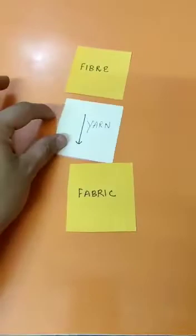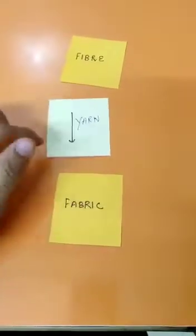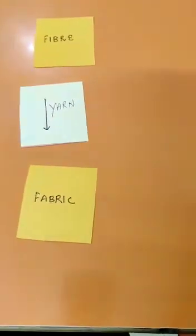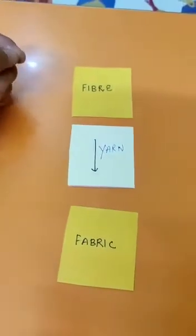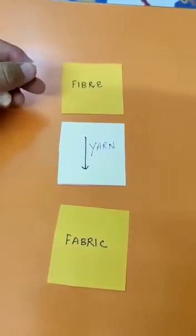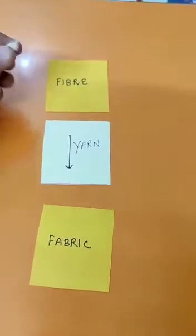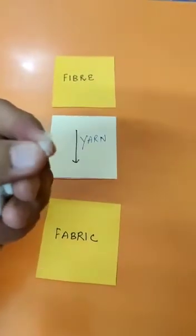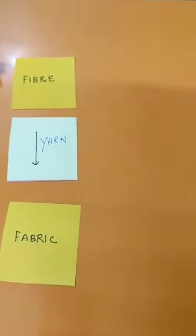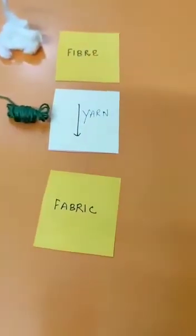Let's see the story of fiber to fabric, which goes from fiber, then yarn, and then fabric. Let's take a cotton piece — that is the fiber. How can we say it is fiber? It is made up of small thin strands. These are called fibers. You can see the edge of this cotton piece and you can see the small pieces there.